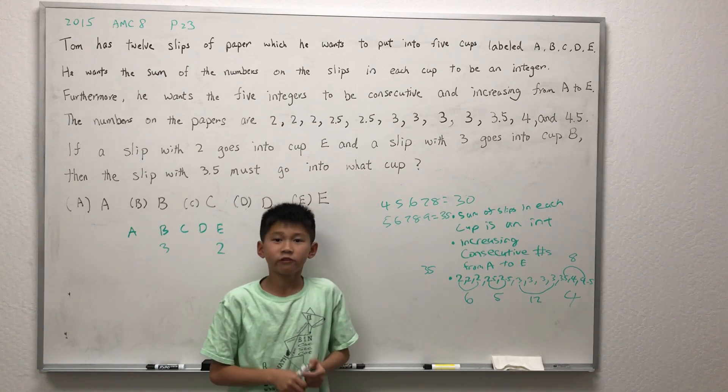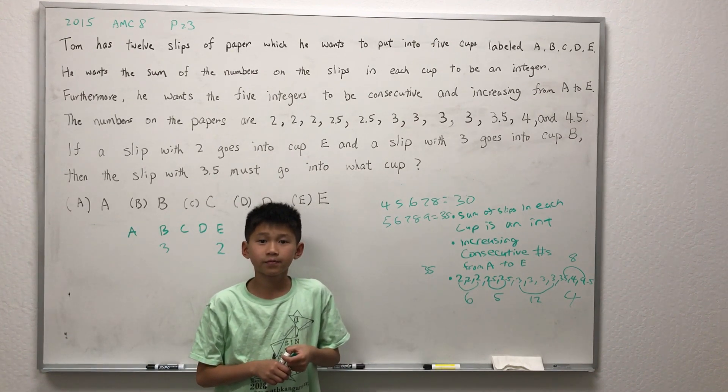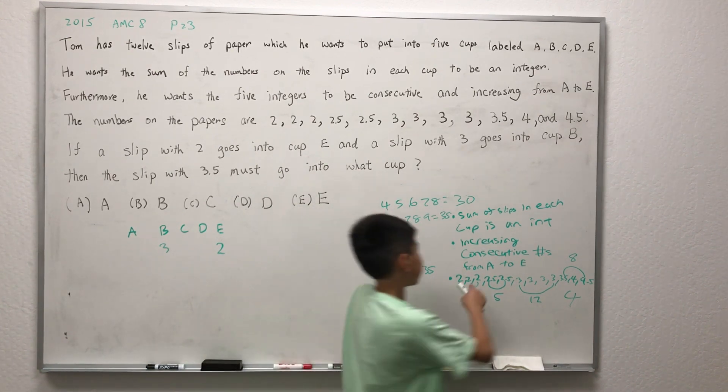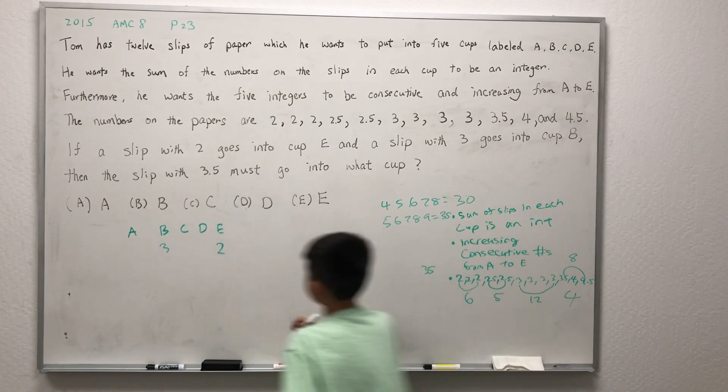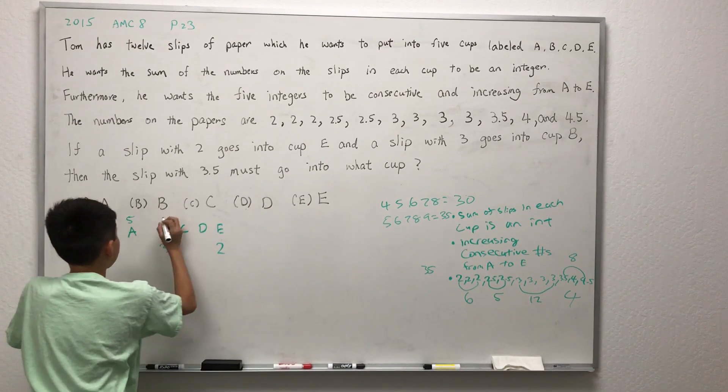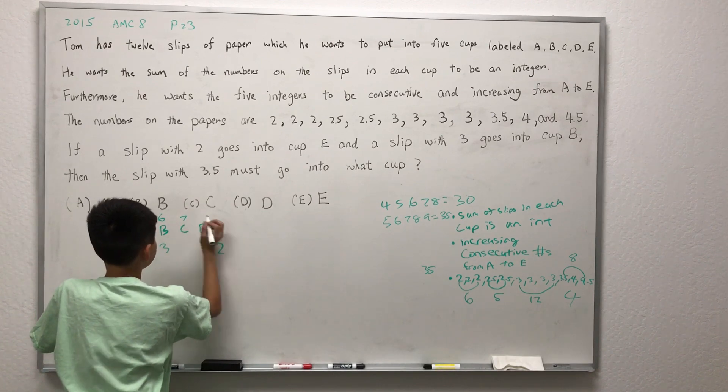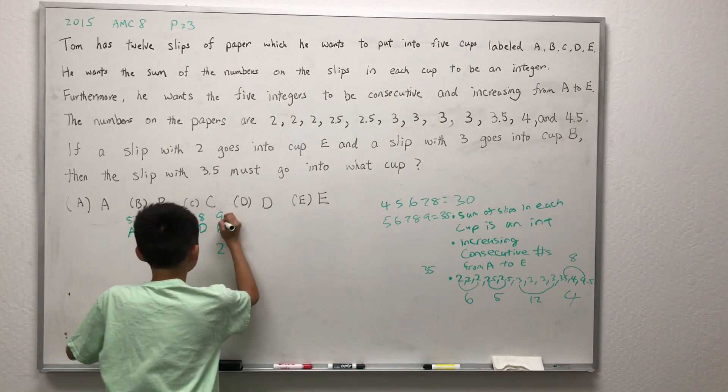So the consecutive numbers are 5, 6, 7, 8, and 9. Since A is going to be the smallest and E is going to be the biggest, A is 5, B is 6, C is 7, D is 8, and E is 9.